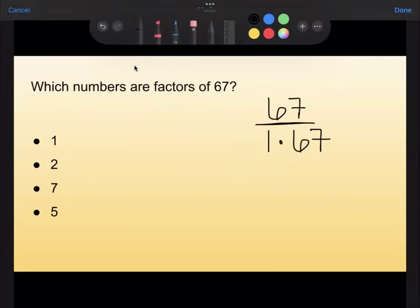Now we know that 2 is not going to work, right? Because it's not an even number. If I add 6 plus 7, I get 13. I had to think for a second. I was like, do I get 15? No, I get 13. And 13 cannot be divided by 3. So I know 3 doesn't work.